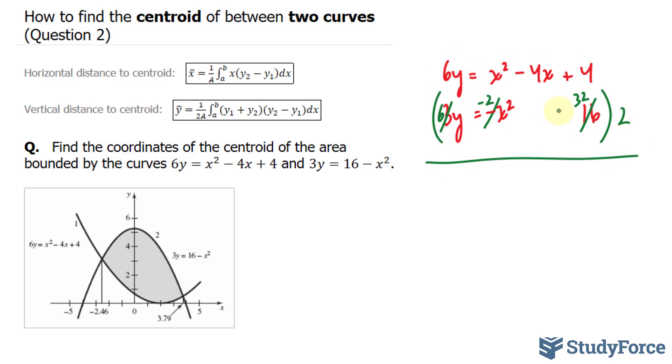If I subtract these two equations, I end up with 6y minus 6y is 0. So 1 minus minus 2, that's like saying 1 plus 2, 3x squared. Negative 4x minus nothing is negative 4x. 4 minus 32 is negative 28.